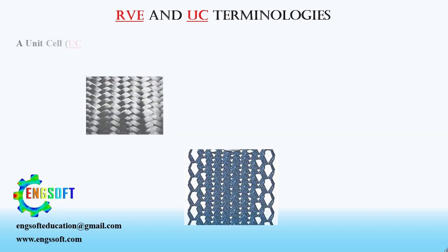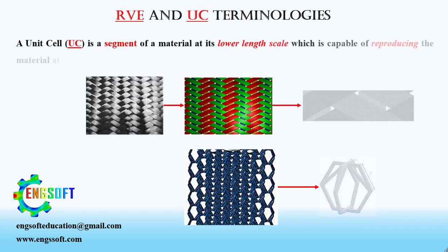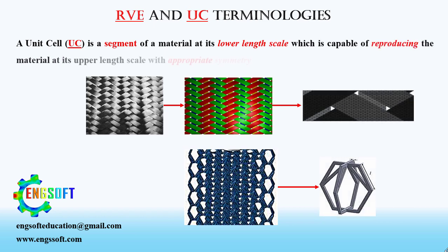A unit cell, or UC, is a segment of a material at its lower length scale which is capable of reproducing the material at its upper length scale with appropriate symmetry transformations. Therefore, the UC and its images resemble the original material without any gap or overlap in space.